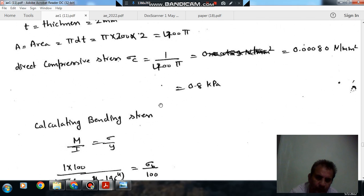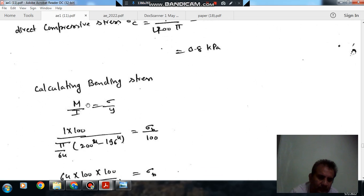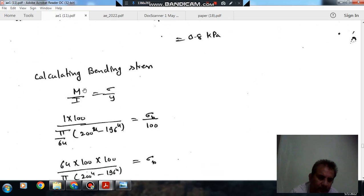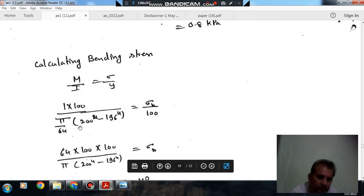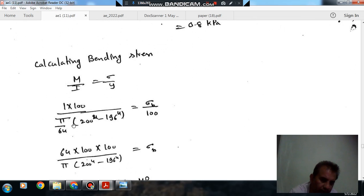Now we have to find out bending stress also to calculate the total stress, because this force causes direct compression as well as bending compression. Bending stress can be derived by using bending equation M by I equals sigma by Y. M is 1kN times 100mm, and I is pi by 64 times (200^4 minus 196^4), because internal diameter is 196 and outer is 200.